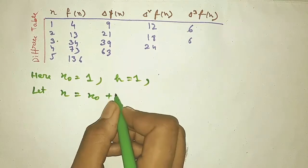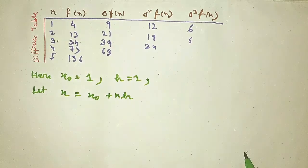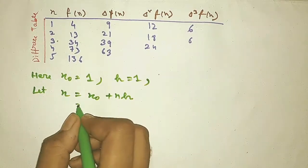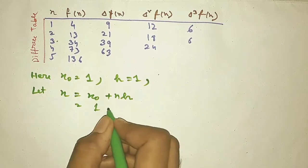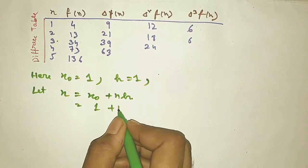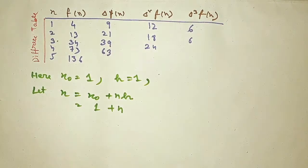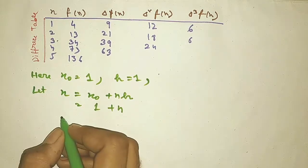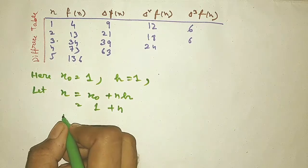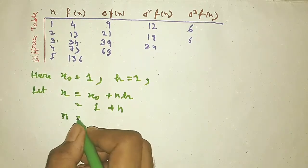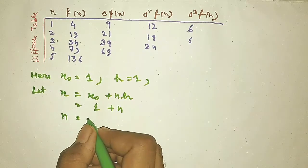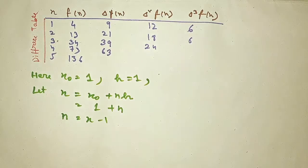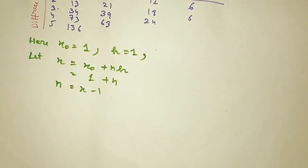We suppose X is any value between 1 and 5. It can be expressed as X = X₀ + n·H. Putting in the values of X₀ and H gives X = 1 + n, so solving for n gives n = X − 1.